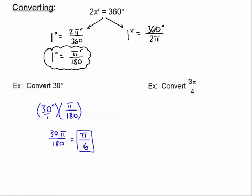360 divided by 2 reduces to 180/1. So 180/π is the conversion factor that we would use to convert from radians to degrees.